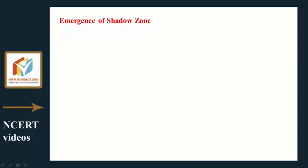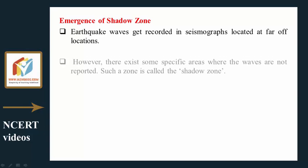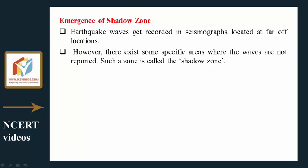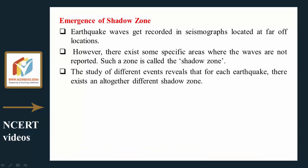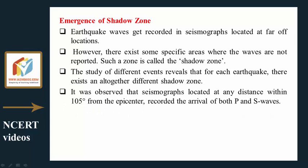Emergence of shadow zone: Earthquake waves get recorded in seismographs located at far-off locations. However, there exist some specific areas where the waves are not reported; such a zone is called the shadow zone. For each earthquake there exists an altogether different shadow zone. Seismographs located at any distance within 105 degrees from the epicenter record the arrival of both P and S waves.